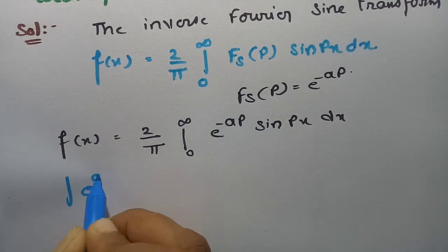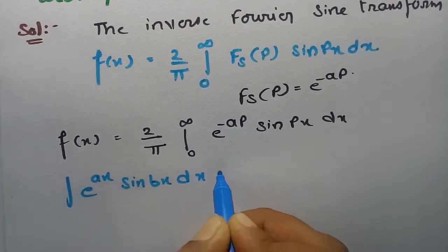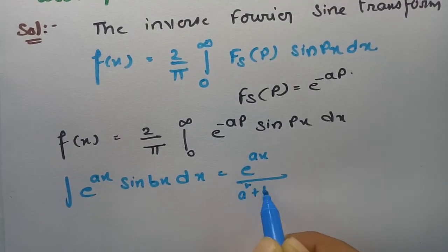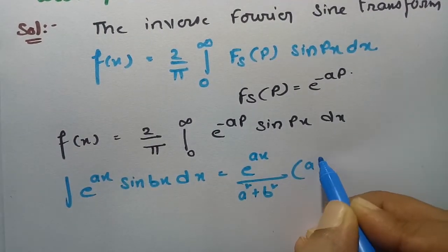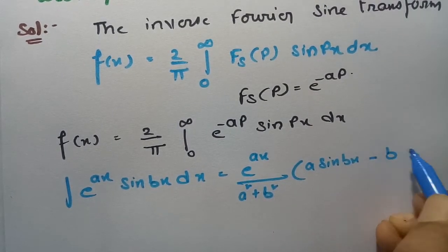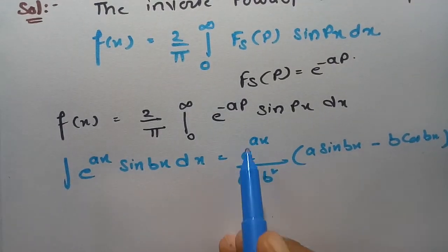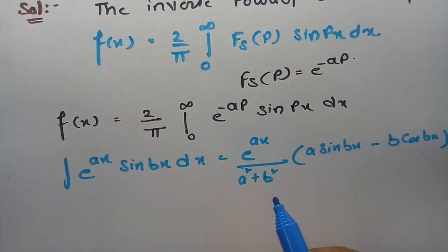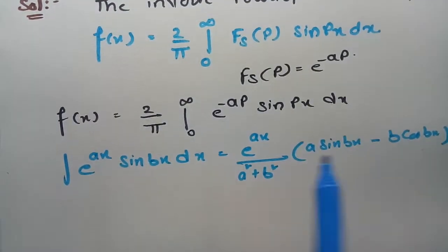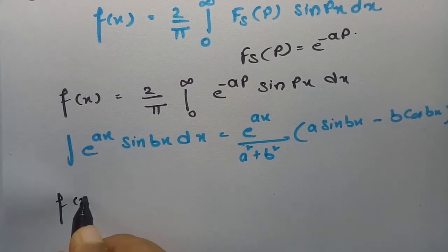We have a formula: the integral of e^(ax) · sin(bx) dx equals e^(ax) divided by (a² + b²), times (a·sin(bx) − b·cos(bx)). Comparing our integral, in place of a we have −a, and in place of b we have p.